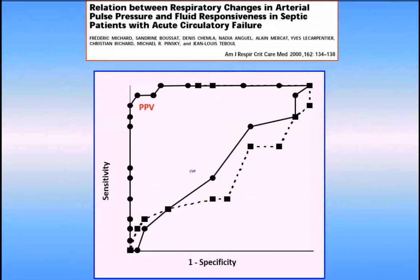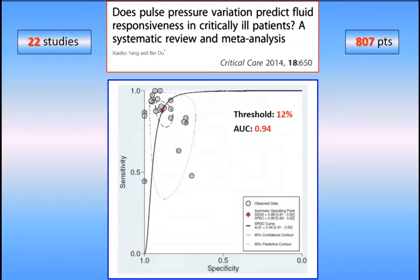This hypothesis was tested in our unit with Frédéric Michard and colleagues, and we showed that pulse pressure variation — PPV — was far better than CVP and PAOP obtained by Swan-Ganz catheters to predict fluid responsiveness, with a good area under the ROC curve. This result was confirmed by many other studies. A meta-analysis by a Chinese group in patients with mechanical ventilation receiving more than 8 mL/kg tidal volume included 22 studies and 800 patients. PPV was able to predict fluid responsiveness with an area under the ROC curve of 0.94 and a threshold value of 12%.